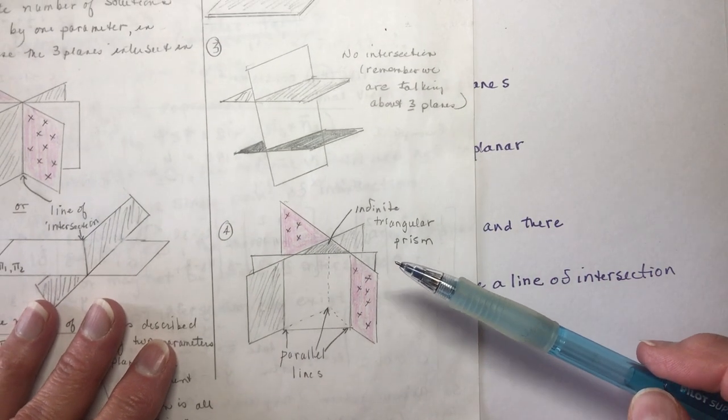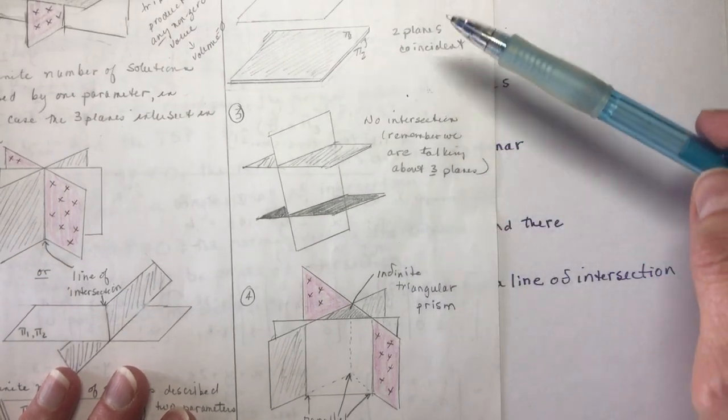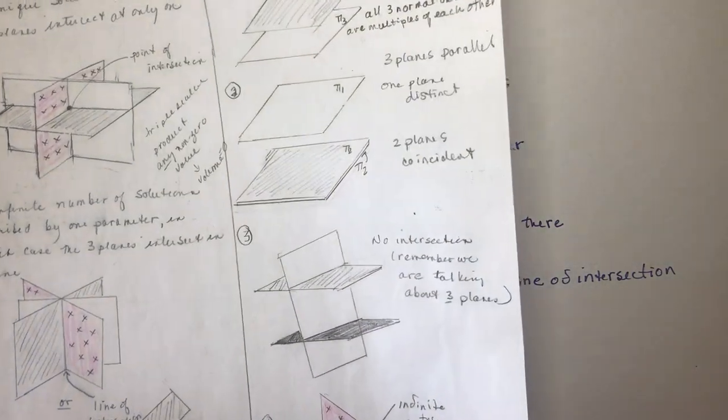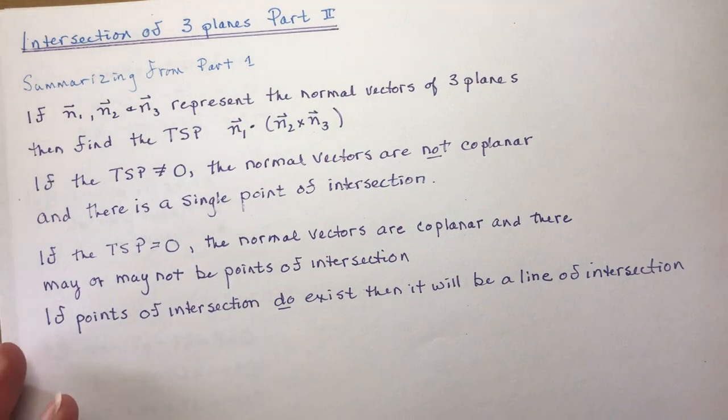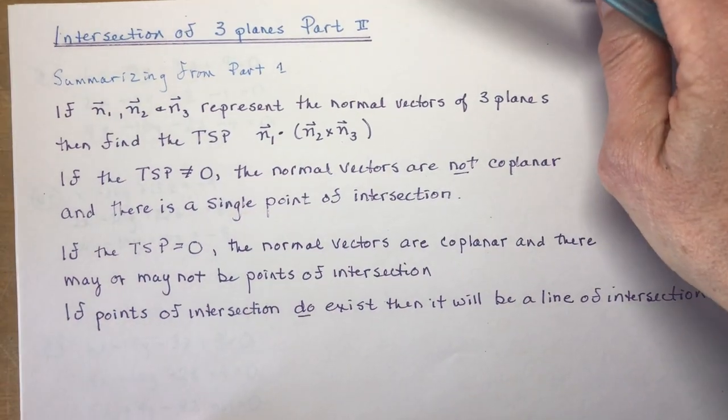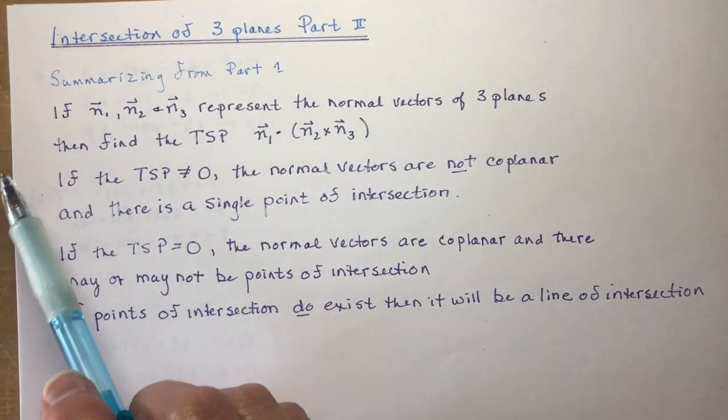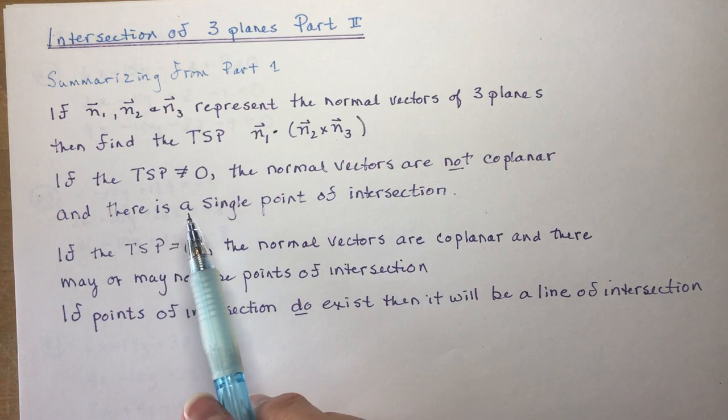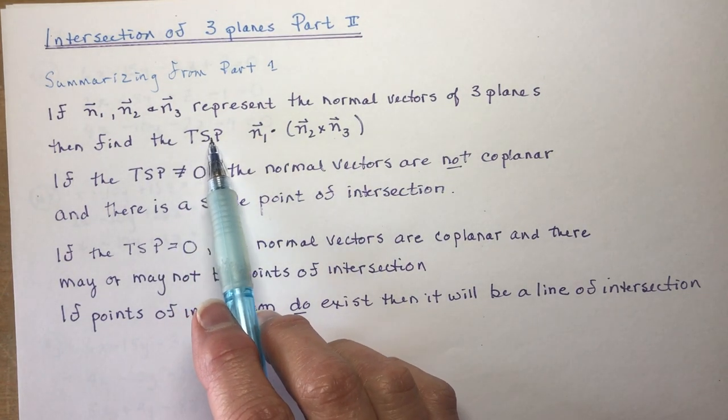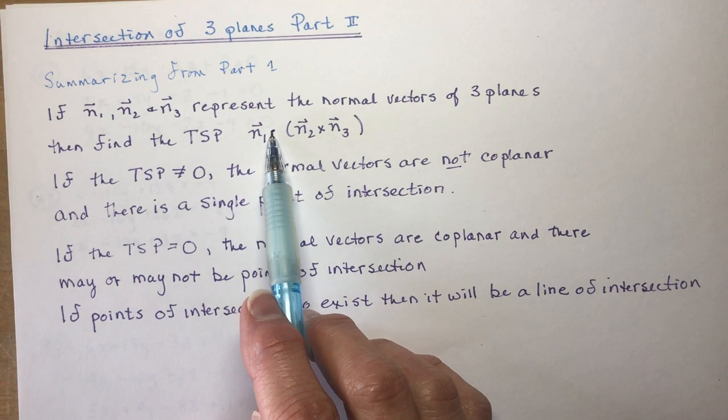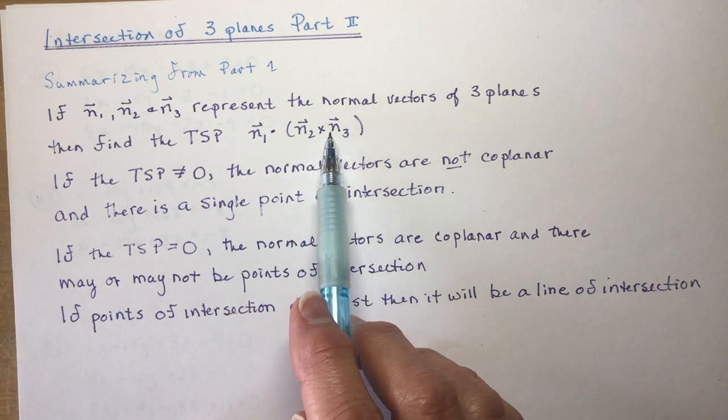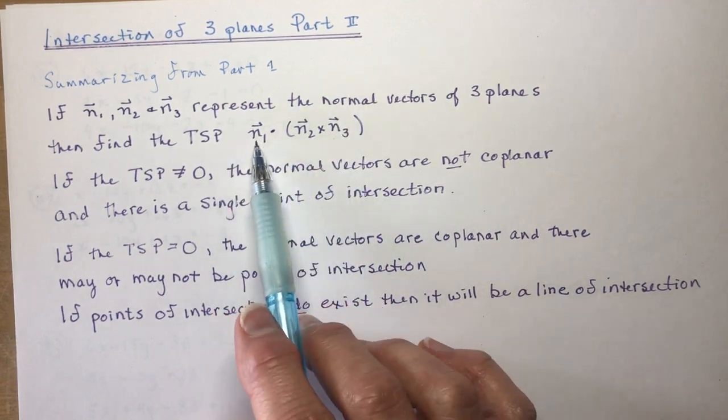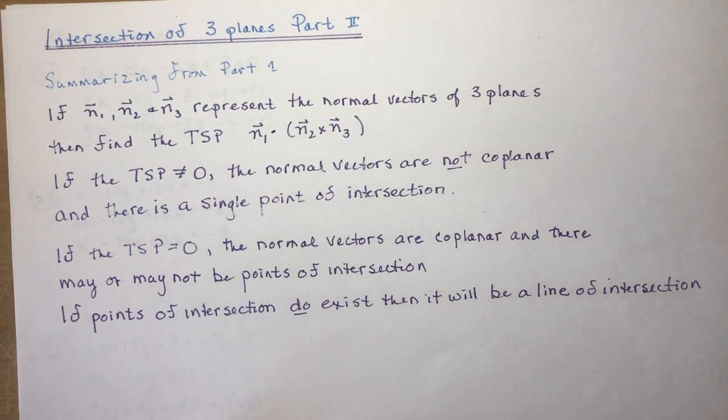My goal here today is to go over just a quick review of what we did and do an example for each of these four inconsistent type of plane intersections or non-intersections. Summarizing from part one, we said if these N1, N2, N3 represent the normal vectors of three planes, and we find the triple scalar product, which means the dot product of N1 with the cross product of any of the other two. It doesn't have to be N1, N2, N3. It doesn't matter which order you do these in.